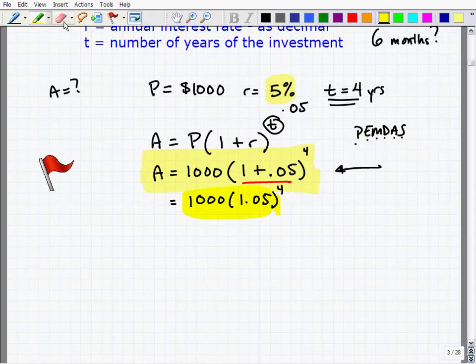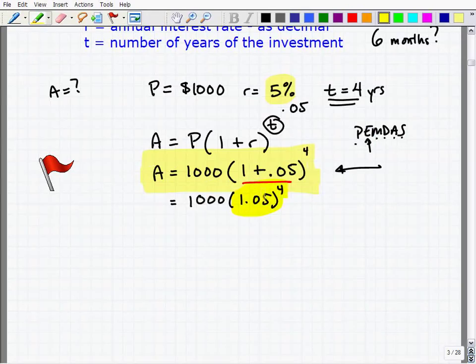That is incorrect, incorrect, incorrect. Remember, you have to do exponents next. So what you have to do is this part. You have to take 1.05 to the fourth power. So let's go ahead and do that, and you really want to make sure you know how to use your calculator.